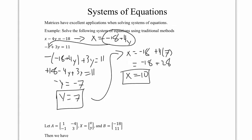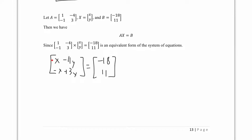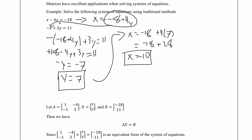Now let's see if we can use matrices. We take A to be the matrix [1, -4, -1, 3], the matrix X to be [x, y], and the matrix B to be [-18, 11]. Then AX equals B is an equivalent form of the system in matrix form. Multiplying gives x minus 4y and negative x plus 3y equals -18 and 11, confirming this is fundamentally the same system.